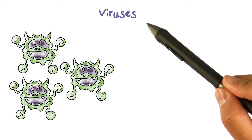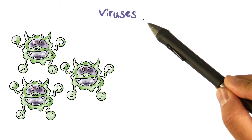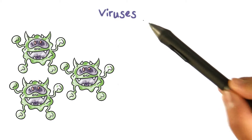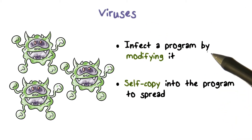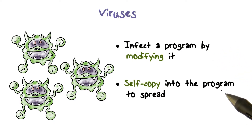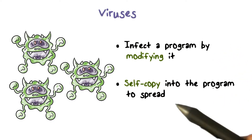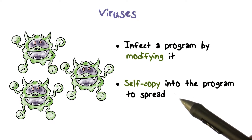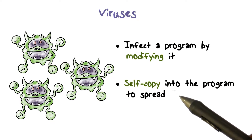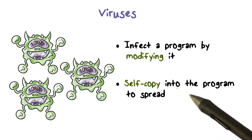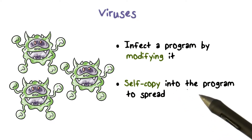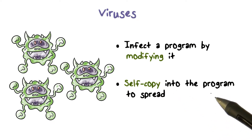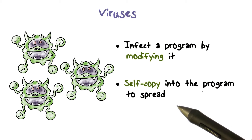Viruses are perhaps the best known type of malware. A virus infects a program by modifying the program code so that when the program runs, the virus code also runs. It then self-copies into other programs and thus spreads itself.